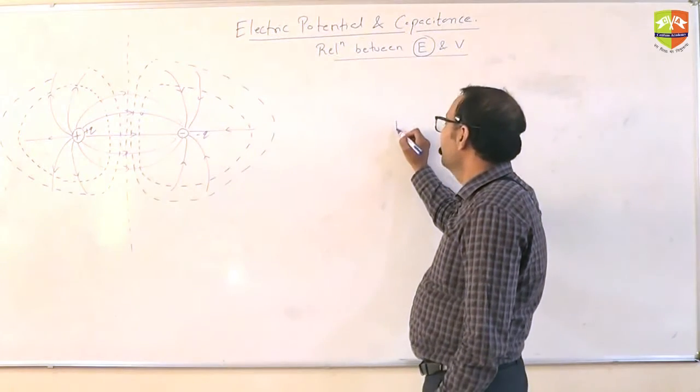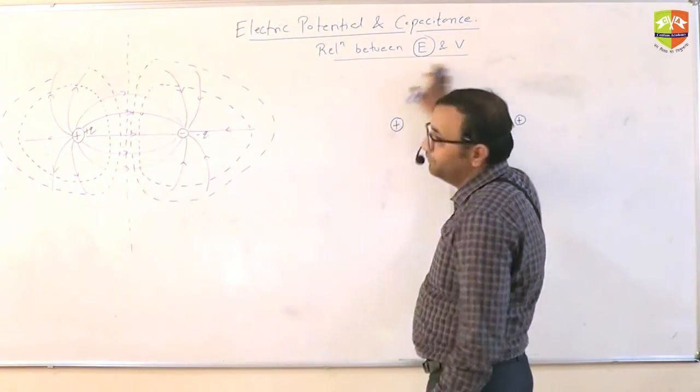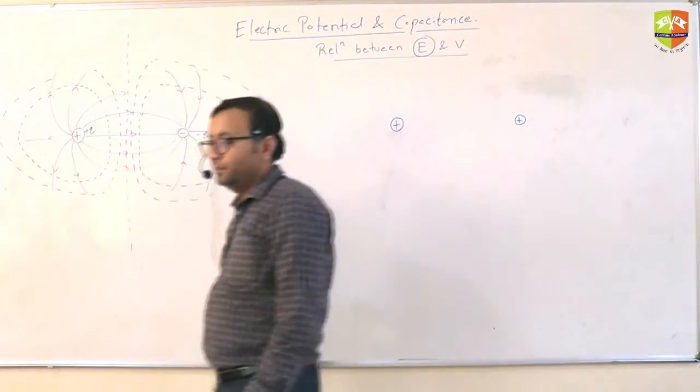Now, another one. Suppose you have two positive charges. Then you draw the field lines. And then if you draw the equipotential surface.